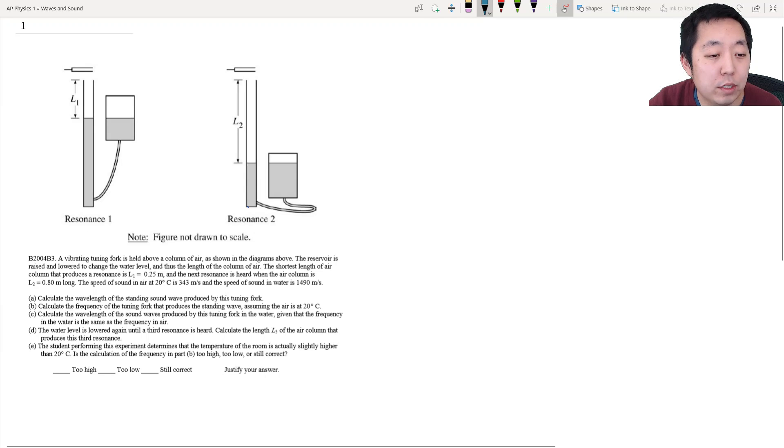We have a vibrating tuning fork held above a column of air shown in the diagram above. The reservoir is raised and lowered to change the water level and the length of the column of air. The shortest length of air column that produces resonance is 0.25 meters and the next resonance is heard when the air column is 0.8 meters long. The speed of sound in air at 20 degrees centigrade is 343 meters per second. The speed of sound in water is 1490 meters per second. Calculate the wavelength of the standing wave produced by this tuning fork.